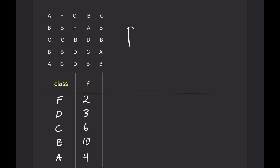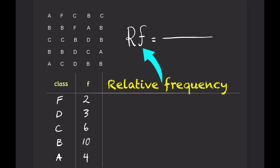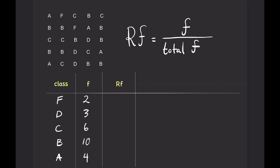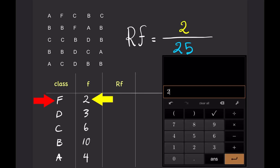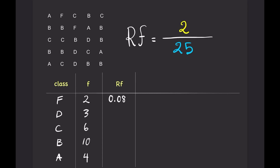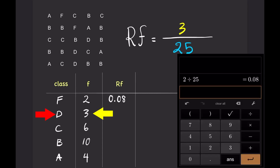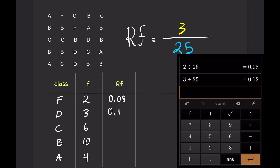To calculate the relative frequency for each class, simply take the frequency for each class and divide by the total frequency. So for the first class, F, relative frequency is 2 divided by 25 equals 0.08. And for the second class, D, relative frequency is 3 divided by 25 equals 0.12.